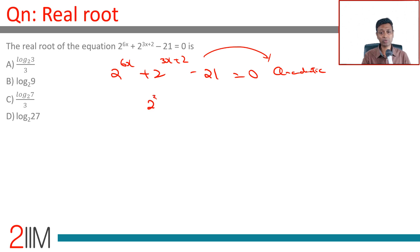2^(6x) is (2^(3x))². So if we call this as y, this is y².